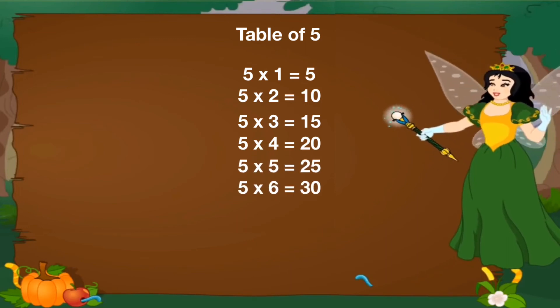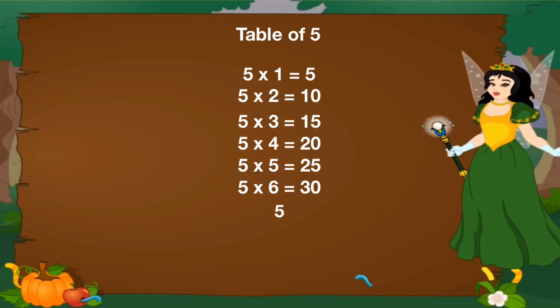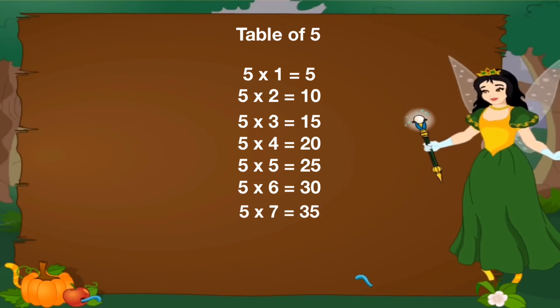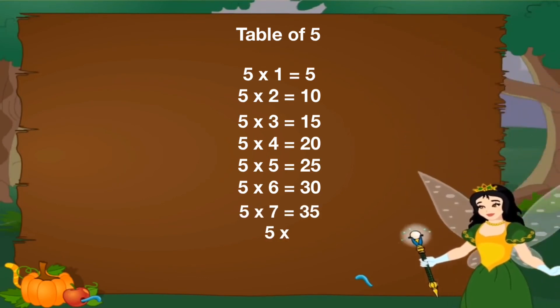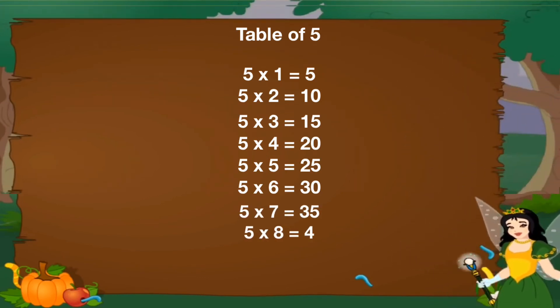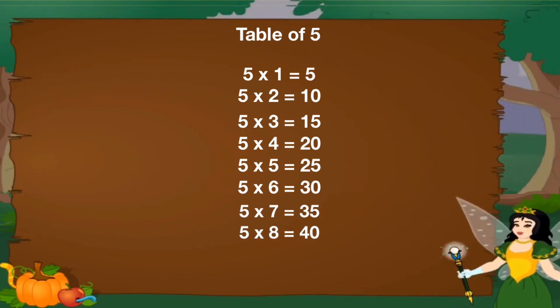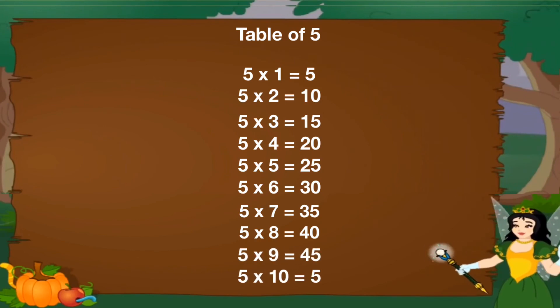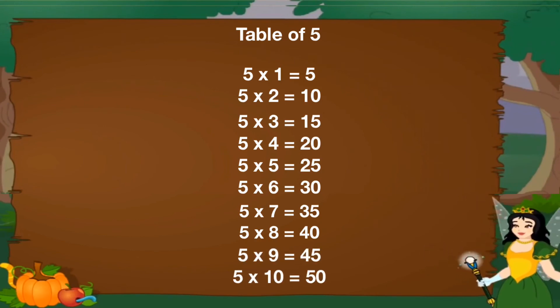5 6's are 30, 5 7's are 35, 5 8's are 40, 5 9's are 45, 5 10's are 50.